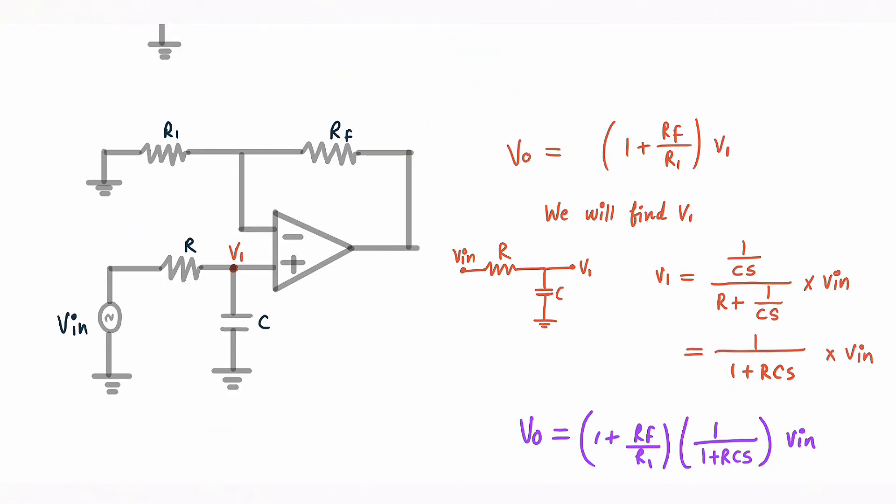Now I have written this same equation but now we have R and C in picture so I will denote the voltage at this point by V1. Now we will find out this V1, it is very simple.